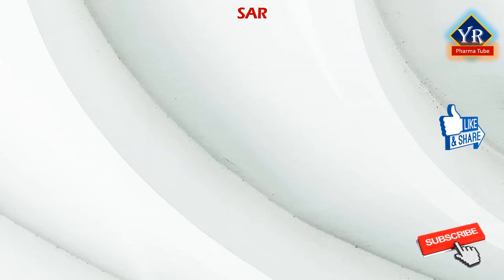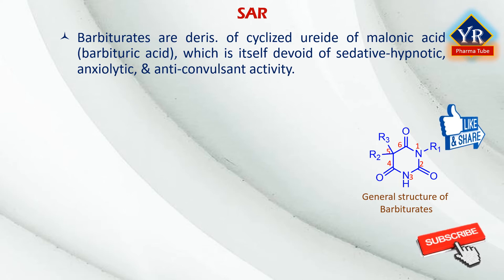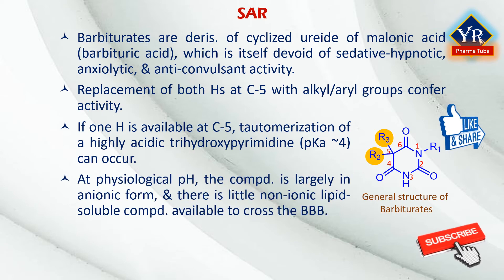Structure activity relationships of barbiturates: Barbiturates are derivatives of a cyclized ureide of malonic acid — barbituric acid — which is itself devoid of sedative hypnotic, anxiolytic, and anticonvulsant activity. However, replacement of both hydrogens at C5 with alkyl or aryl groups confers activity. Barbiturates must contain two substituents on C5 of the hydrogenated pyrimidine structure to exhibit central depressive action. If one hydrogen remains at position 5, tautomerization to a highly acidic trihydroxypyrimidine (pKa ~4) can occur, placing the compound largely in anionic form at physiological pH, so little non-ionic lipid-soluble compound is available to cross the blood–brain barrier.